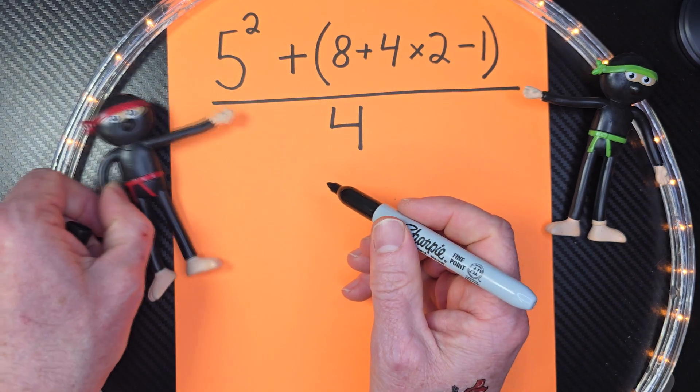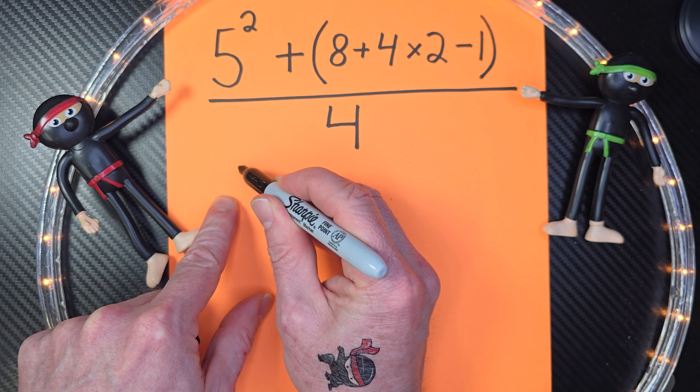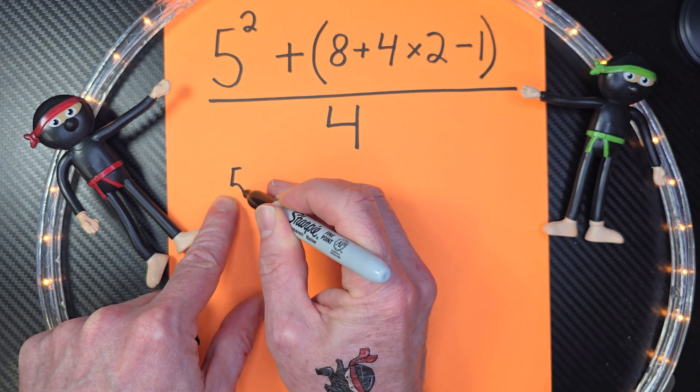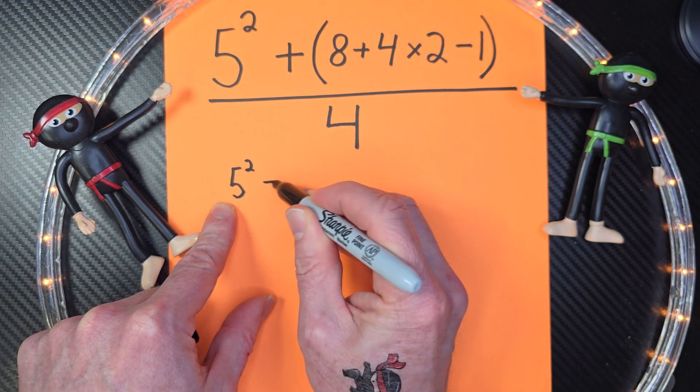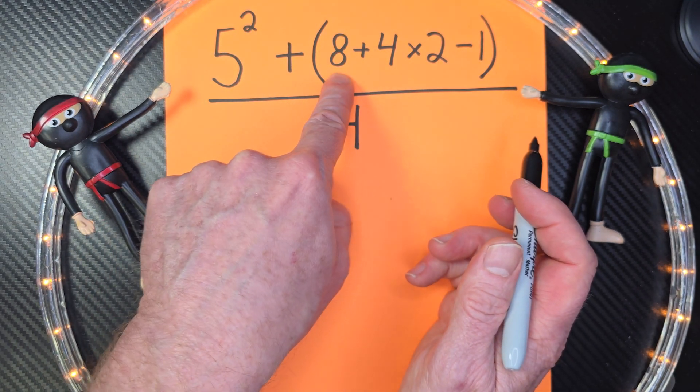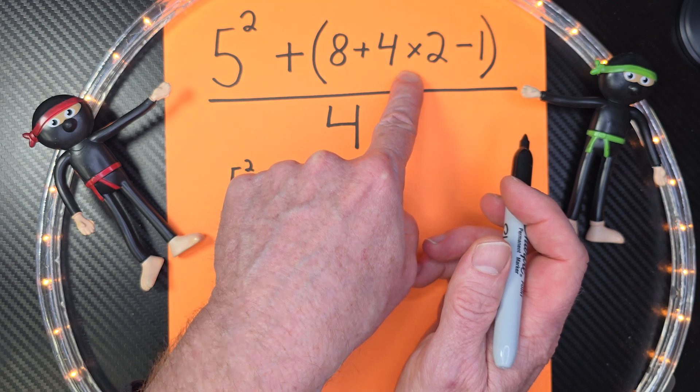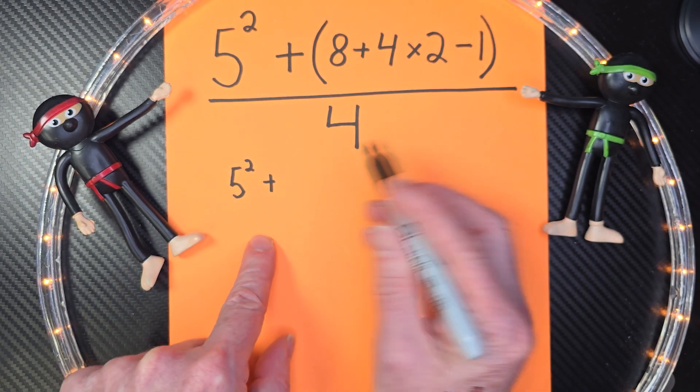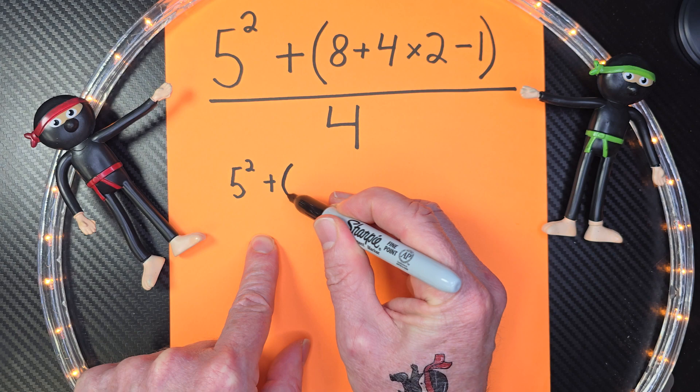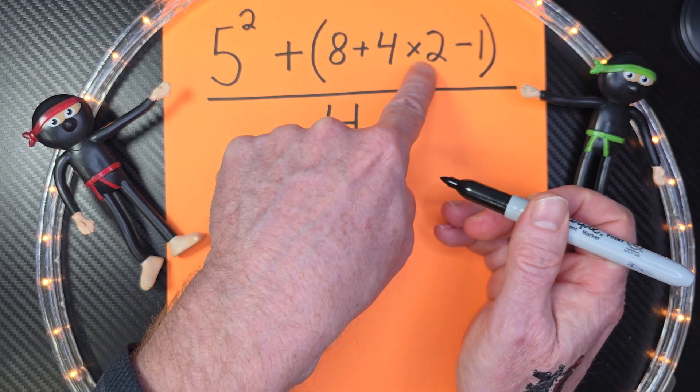So I always like to rewrite it. I'm going to go 5 to the second power plus, and then I do what's inside my parentheses. I see a multiplication problem in there. That's right, we do that first, before we do addition and subtraction. So I'm going to rewrite that, and we'll put 8 plus 4 times 2, 8.